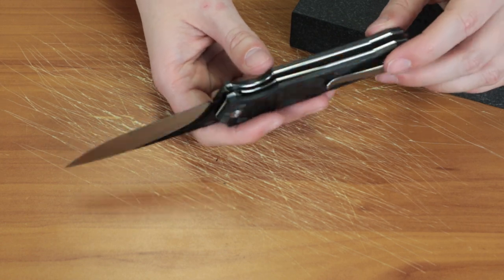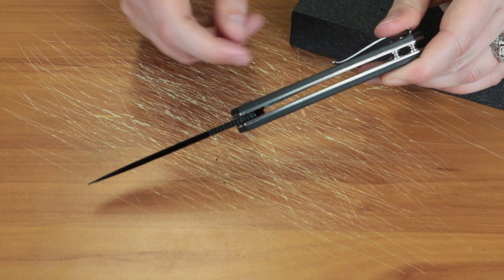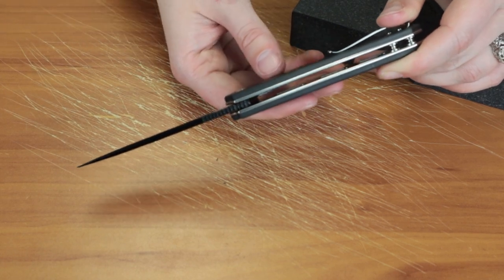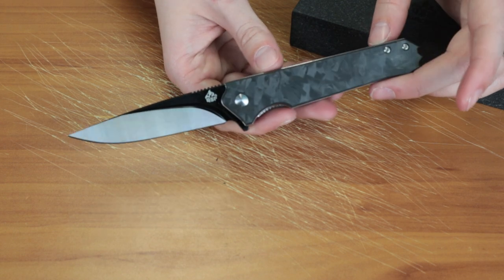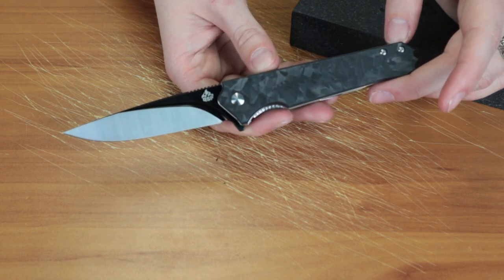It does have some jimping which we all like. It's about 3.5 millimeters in thickness. Hardness is 58-60 on the HRC.